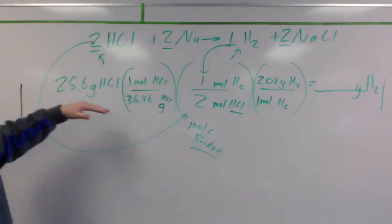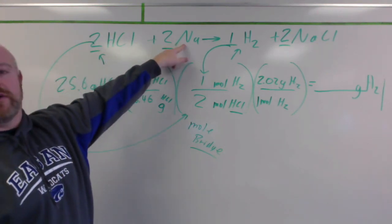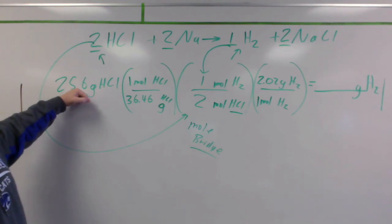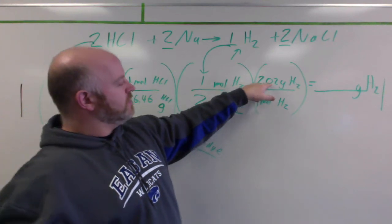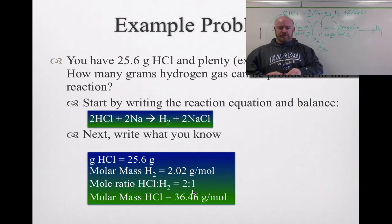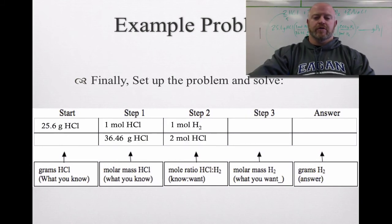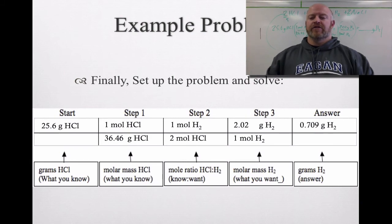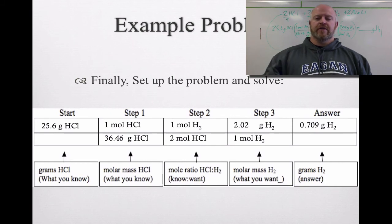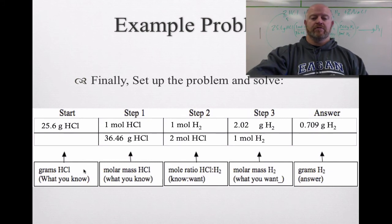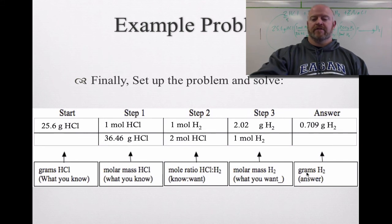Here's our complete setup: we start with grams of hydrochloric acid, an excess of sodium which we ignore since it won't run out. We convert grams to moles using molar mass, apply the mole ratio, then convert moles back to grams. Solving through, we get 0.709 grams of hydrogen. We round to three significant figures because we started with three sig figs. The mole ratio values are exact and the molar mass values come from the table, so they don't count against significant figures. Everything inside cancels out, and we get our answer with the proper label.